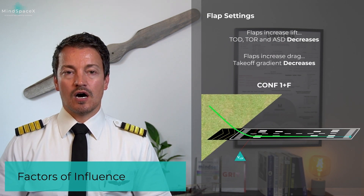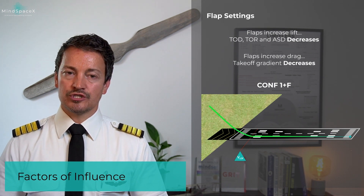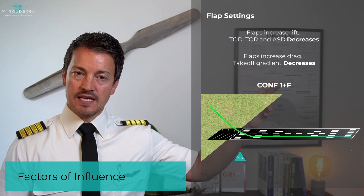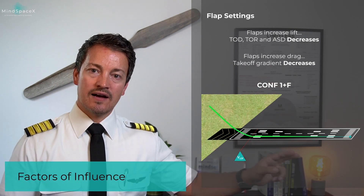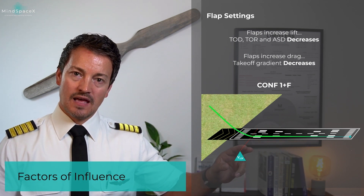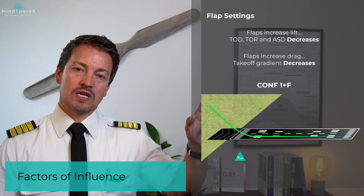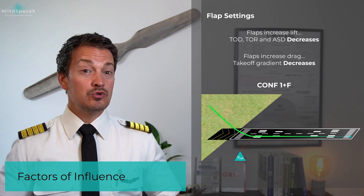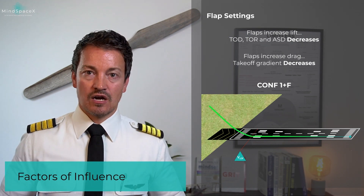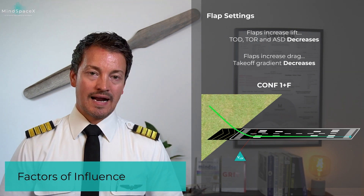To put that into a clearer picture, here is an illustration of the three configurations. With takeoff on config 1+F, we have less drag on the aircraft, so we are able to accelerate to a high speed and climb very rapidly. But we do spend more time on the ground because we need more forward speed — a longer takeoff run and takeoff distance — though we are able to climb at a higher gradient.